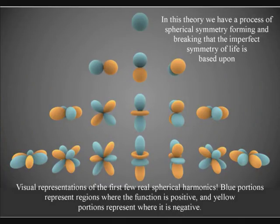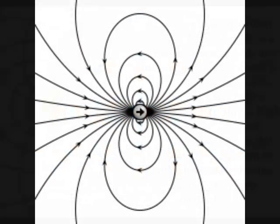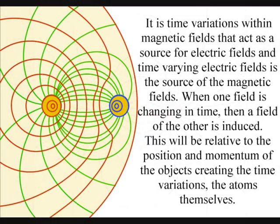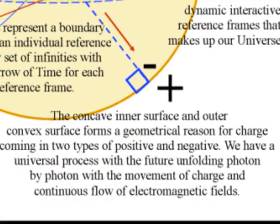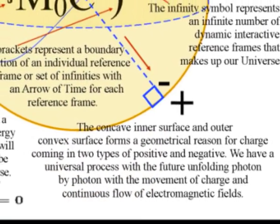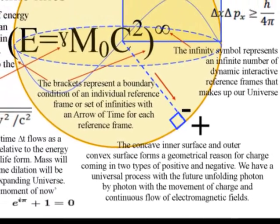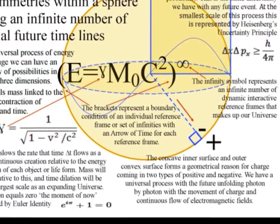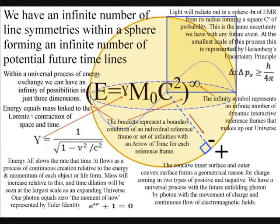This process of photon energy exchange is forming the movement of positive and negative charge and continuous flow of electromagnetic fields in three-dimensional space. In this theory, the two-dimensional surface of the sphere forms a dynamic boundary condition, with the concave inner surface forming negative charge and the convex outer surface forming positive charge.